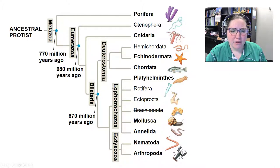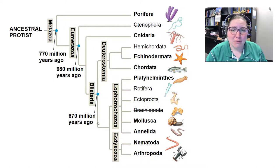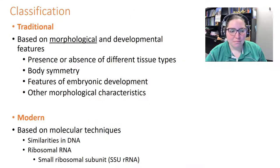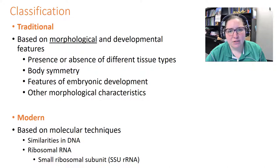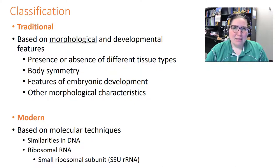We'll also cover terms like metazoa, eumetazoa, deuterostomia, bilateria, lophotrochozoa, and ecdysozoa. Traditionally, animal classification was based on morphological structures and developmental features like tissue types, body symmetry, and embryonic development. Modern classification uses molecular techniques — similarities in DNA and ribosomal RNA, particularly the small ribosomal subunit — leading to some reclassification.